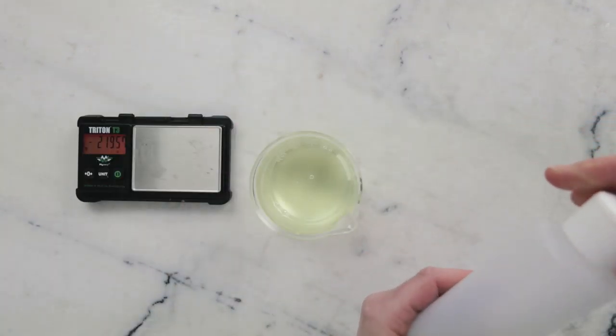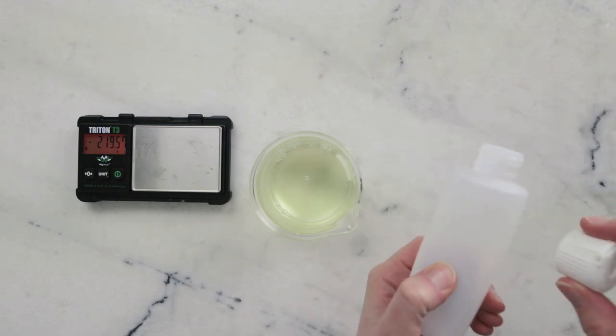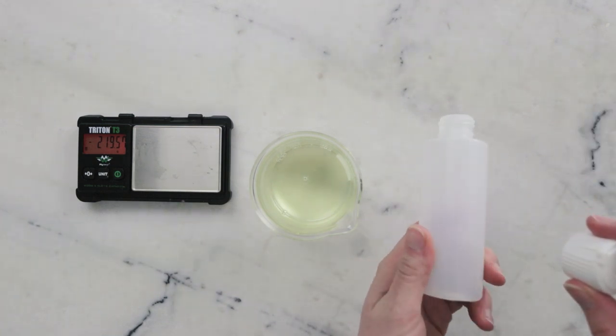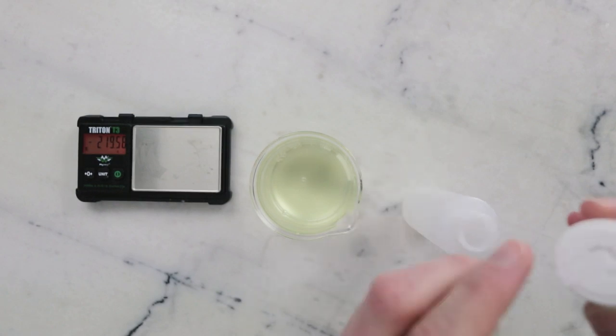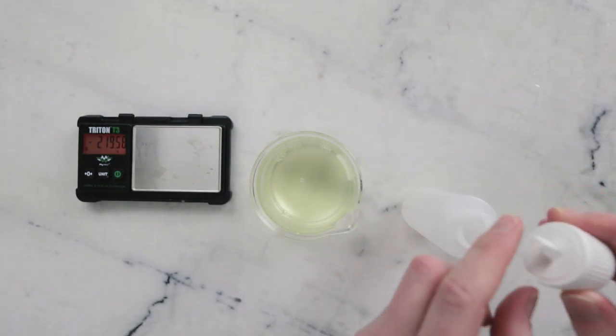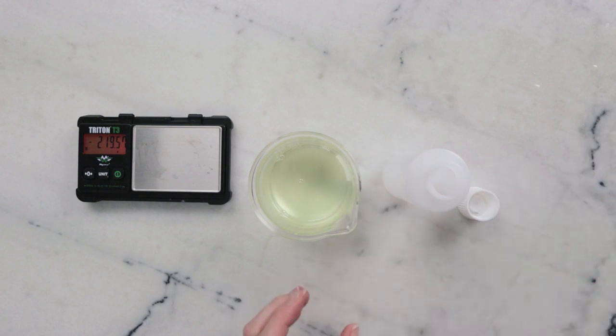To package it up, I'm going to put the cleansing oil in this squeezy bottle. It's a 120-milliliter or 4-ounce bottle with a turret cap. I find this type of cap is great for dispensing cleansing oils.